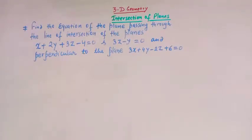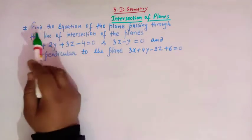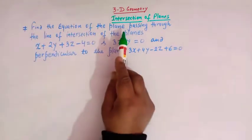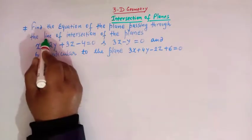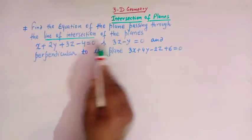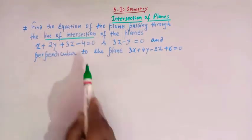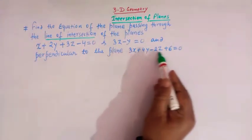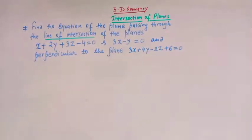Hello viewers. In today's class we are going to solve yet another important problem from three-dimensional geometry. We are going to take up one important problem from intersection of planes. The problem is: find the equation of the plane passing through the line of intersection of two given planes, where that plane is perpendicular to the plane whose equation is 3x + 4y - 2z + 6 = 0.